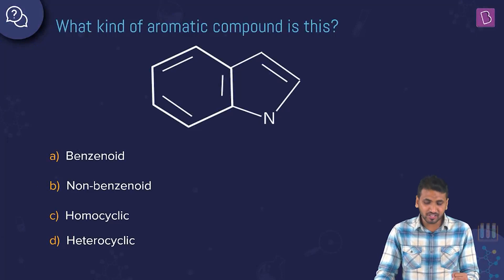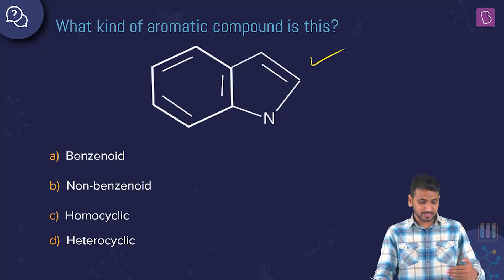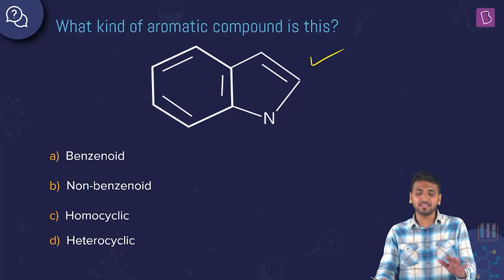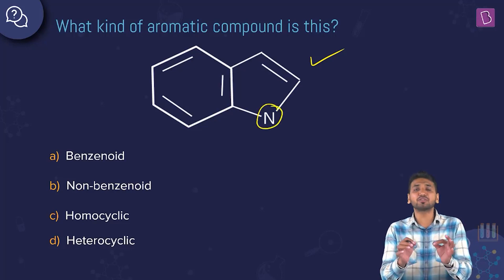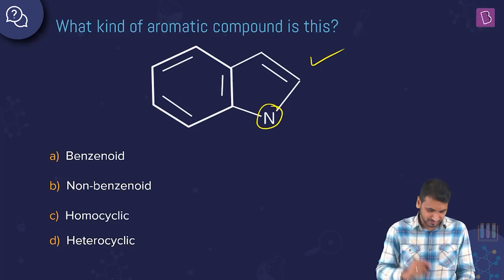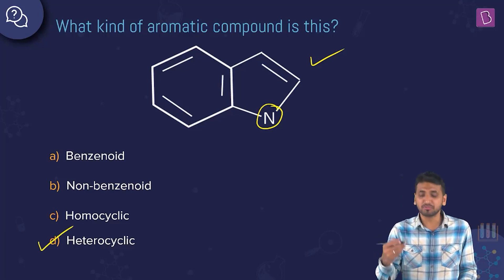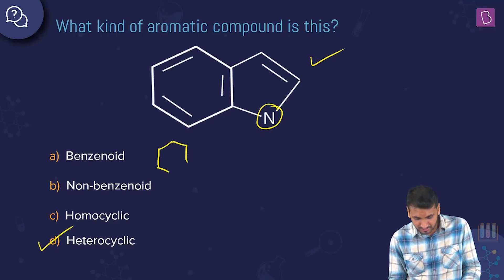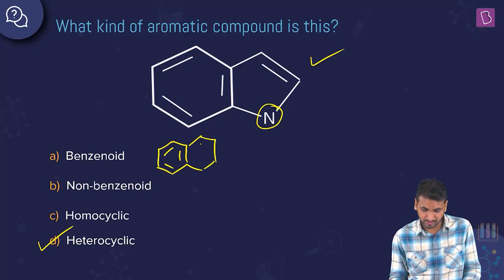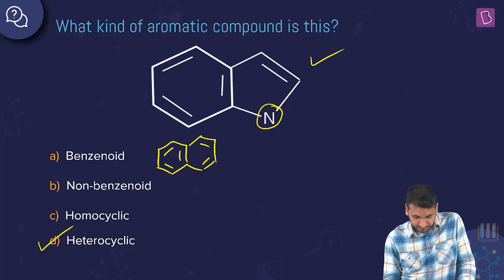Here we have a question on types of aromatic compounds. A compound is shown with nitrogen in the ring. The options are benzenoid, non-benzenoid, homocyclic, or heterocyclic. The moment nitrogen appears in the ring, the molecule becomes heterocyclic, so the answer is option D.